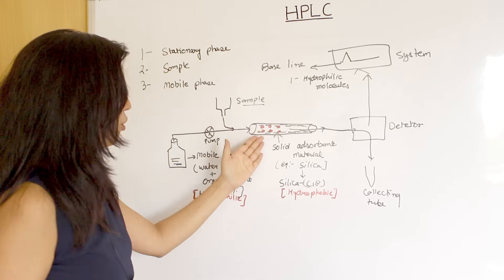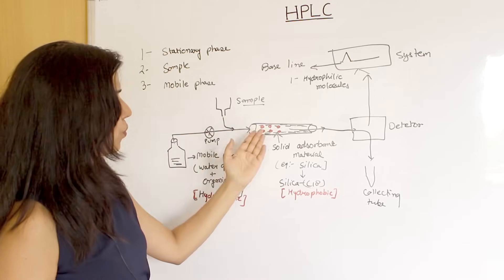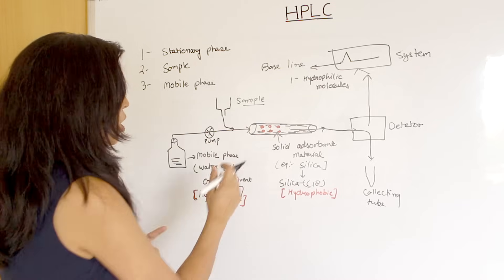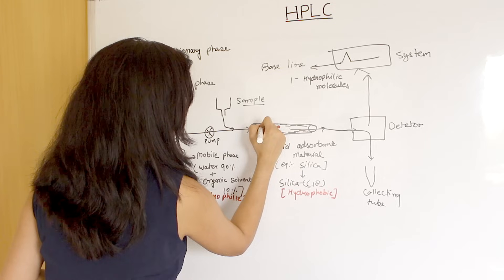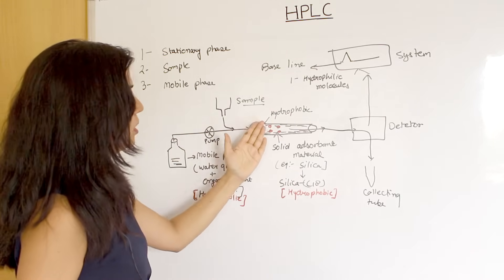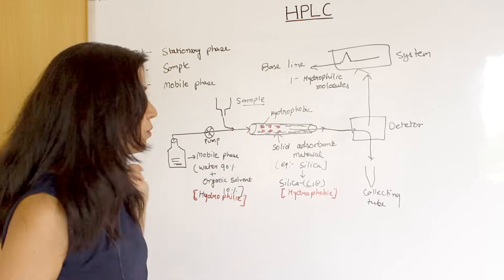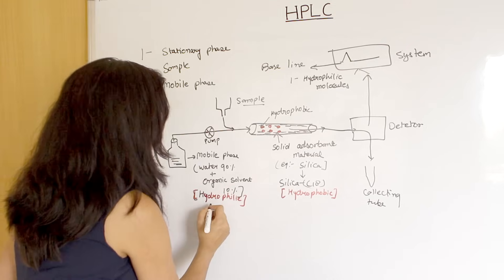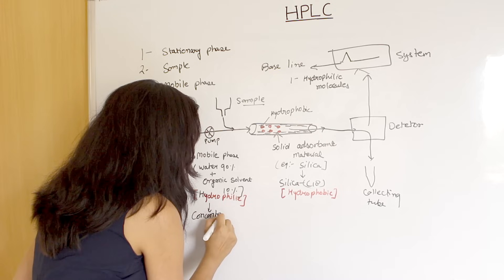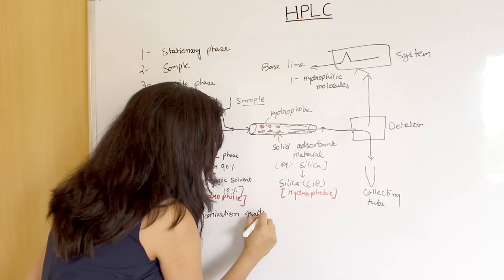After that, the hydrophobic molecules are present in the sample. They are bound to the resin because the resin is of the same hydrophobic nature. So if there are hydrophobic molecules, they form a bond with this resin. Now, this bond needs to be broken because the molecules are very slow to move through the column. So what do we do here? We apply a concentration gradient.